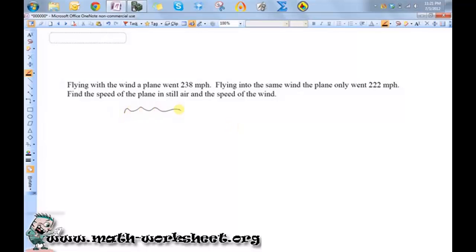What we're going to do is we're going to say, okay, this is the wind and it has some speed. So the wind is W miles per hour.